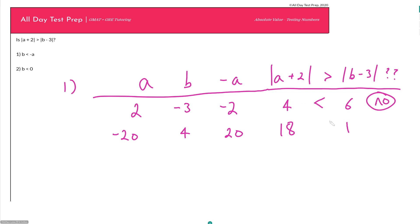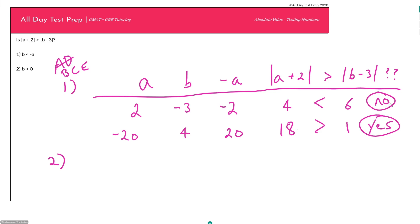Since 18 is greater than 1, we get a Yes. Once we have both a No and a Yes, that's sufficient to prove insufficiency — we can stop. If the statement were sufficient, we would have kept getting the same answer, but here Statement 1 is insufficient.